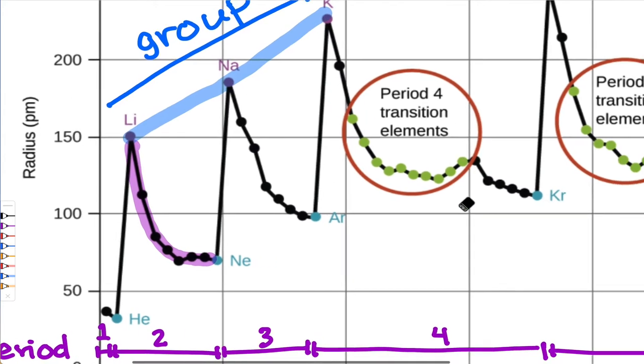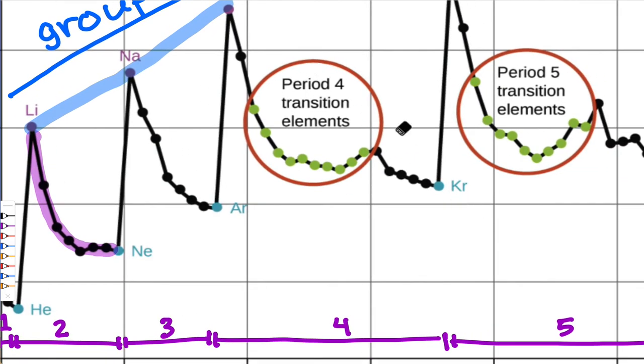The transition elements are worth commenting on because they're a little bit rebellious in some ways when it comes to periodic trends. They don't always display the periodic trends consistently. We're seeing that here as there's a slight uptick in radius at the end of the transition series. Generally speaking, if we want to apply periodic trends consistently, we look only at the main group elements. If you focus only on the black, blue, and purple dots here, we'll see that the trend is very consistent.